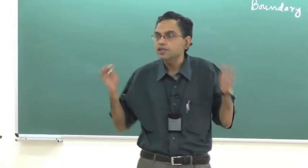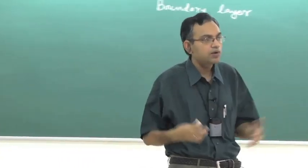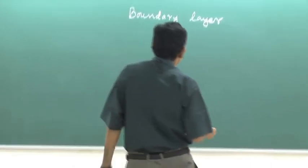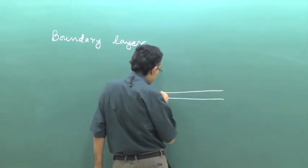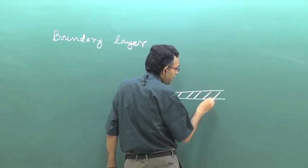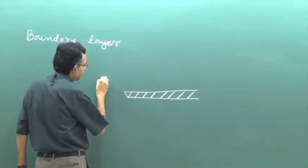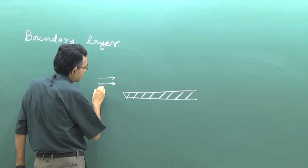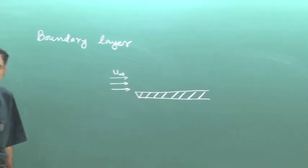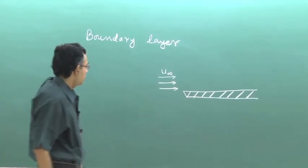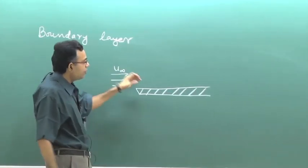We will first try to develop a concept of what is a boundary layer and then try to develop a theory known as boundary layer theory. Let us say that there is a flat plate and fluid is coming from the free stream with a velocity u-infinity. When the fluid encounters the solid boundary, there is an interaction between the fluid and the solid boundary.